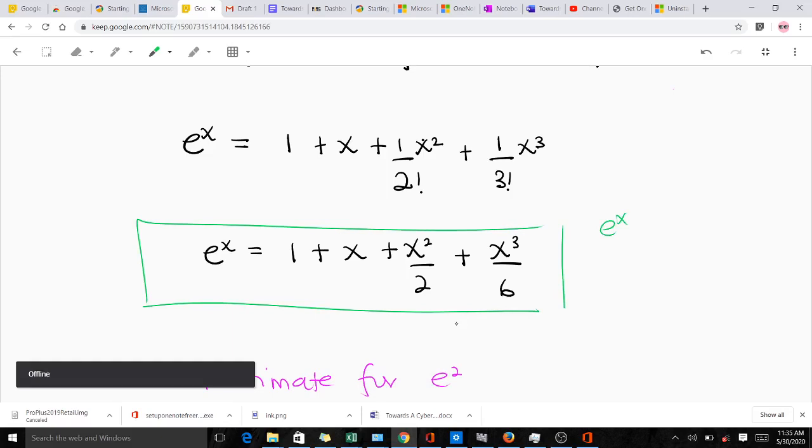Generally, the Maclaurin series for e^x is given as summing from n starting from 0 to infinity, x^n over n factorial. This happens to be the answer to the first part of the question.